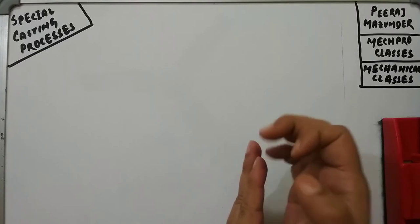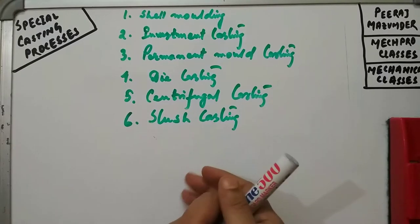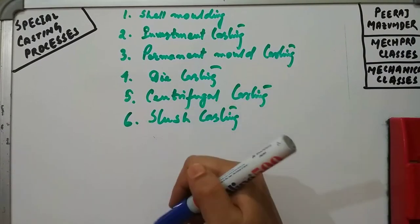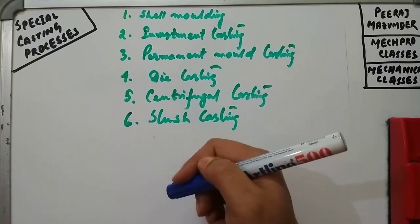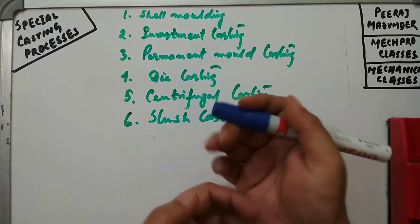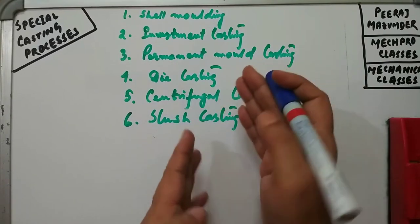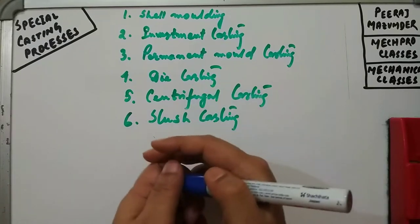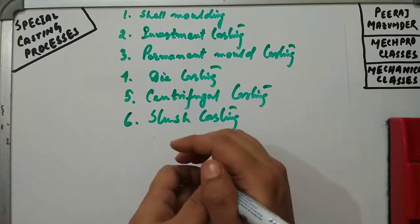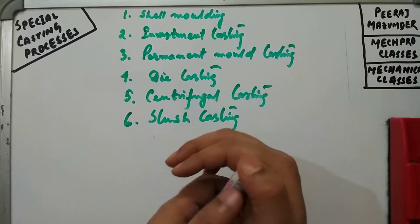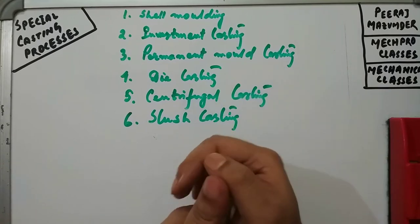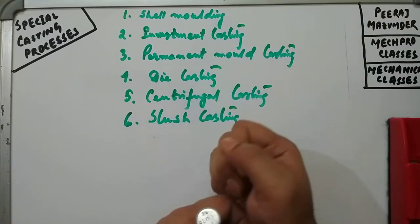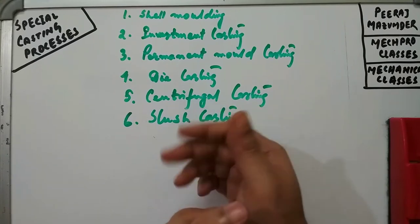We have to learn precisely how much is needed for securing a good mark in your semester examination, and touch specific details of each topic so we can do well in competitive examinations. We will be discussing 6 particular Special Casting Processes - the most important ones for your examinations. We will first discuss a description of each process, then move to advantages, limitations, and applications.